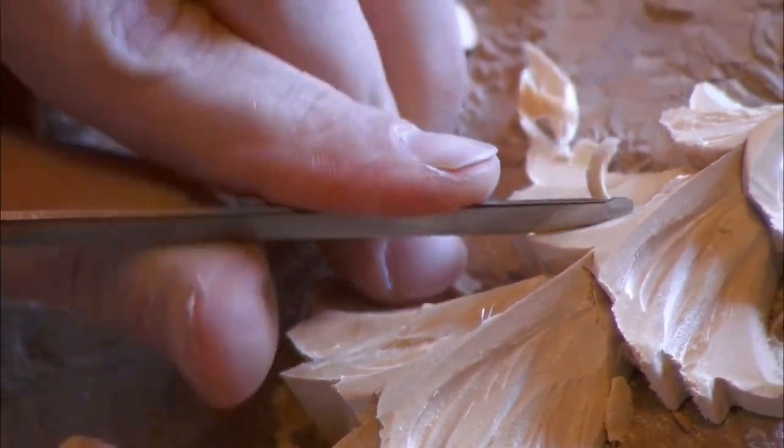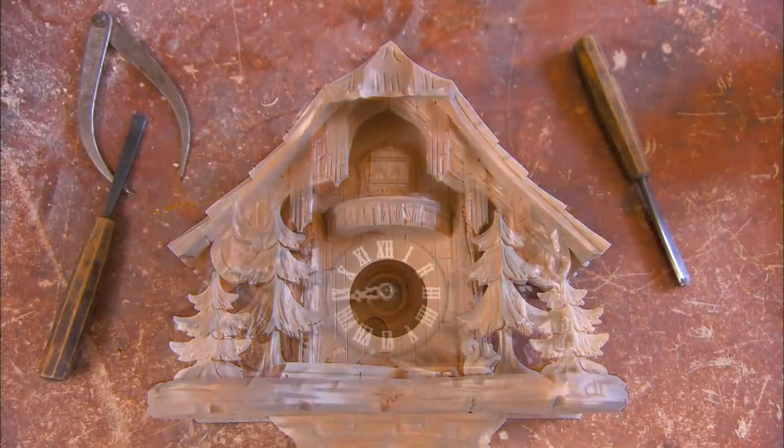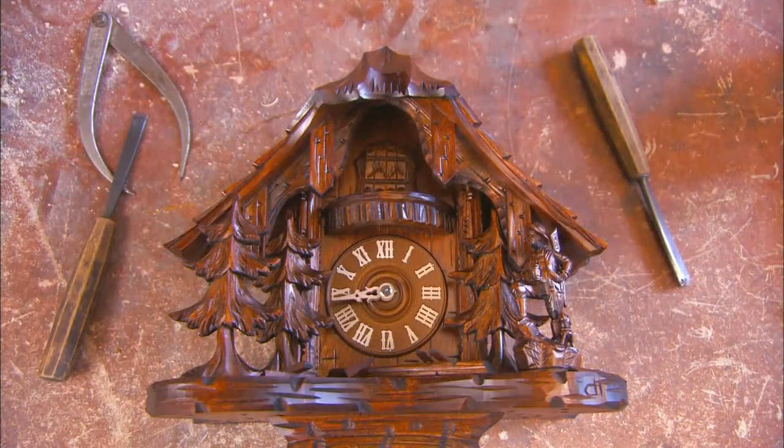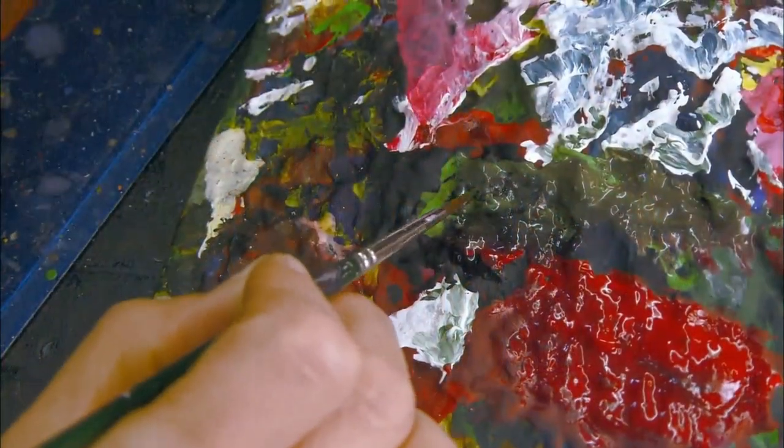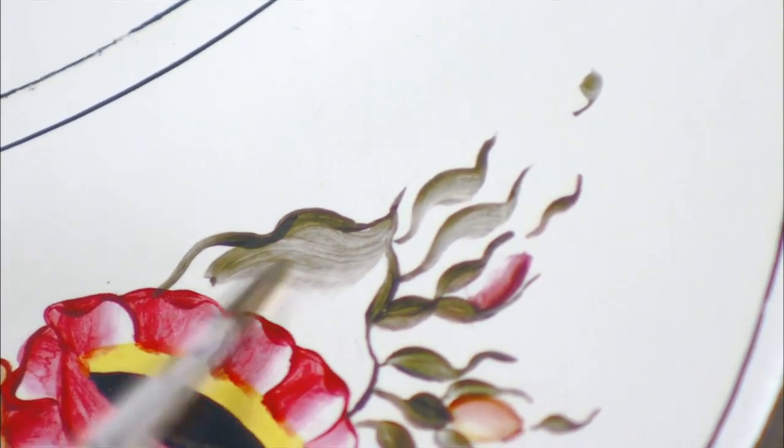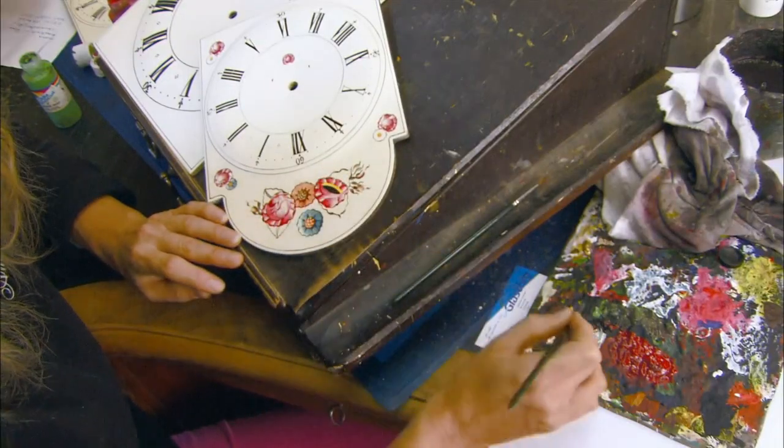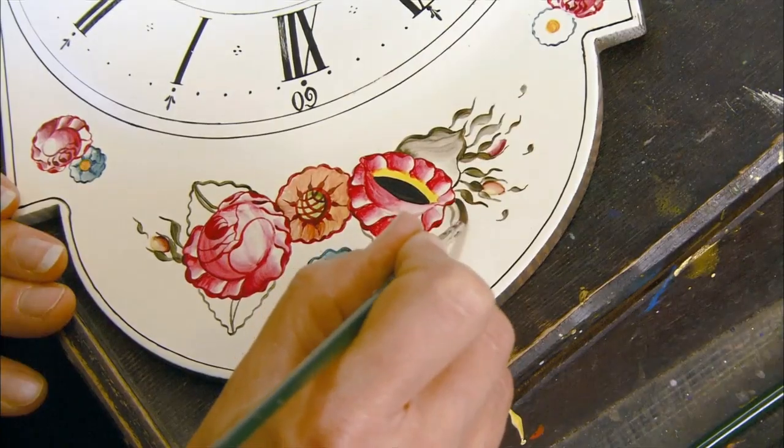The clock cases these carvings decorate are made of pine or plywood, depending on the model. Often a case has no carving at all. Instead, an artist paints an elaborate design. Some cases feature a combination of painting and carving.